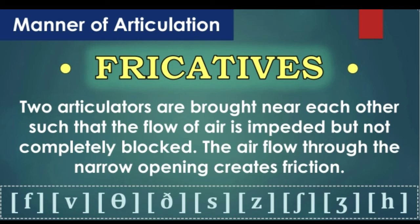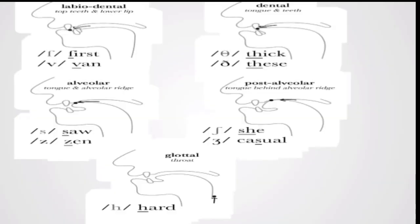Fricative sounds, or friction sounds. What happens to the airstream in the production of these sounds? It gets squeezed, because two articulators come close to each other, and when they come close, the opening between them gets narrowed. When the airstream passes through that narrow opening, it produces a kind of friction. You'll notice that the air passage is not completely blocked, but narrowed. Look at these figures.